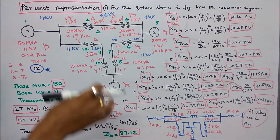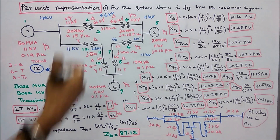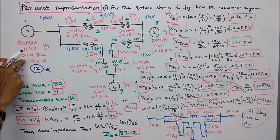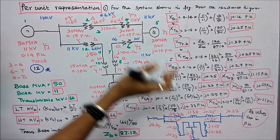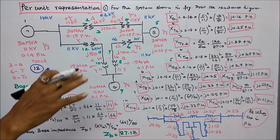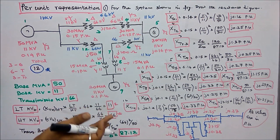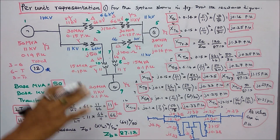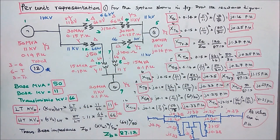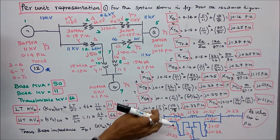Per unit impedance = actual value / base value. For Generator 1: per unit reactance = 0.14 × (VB1/VB2)² × (SB2/SB1) = 0.14 × (11/11)² × (50/50) = J0.14 per unit. This value J0.14 is marked in the reactance diagram.